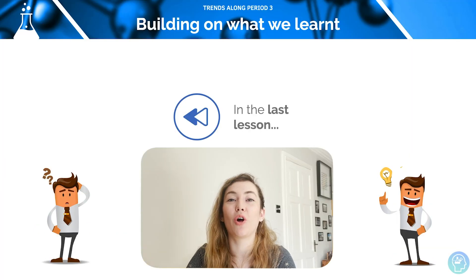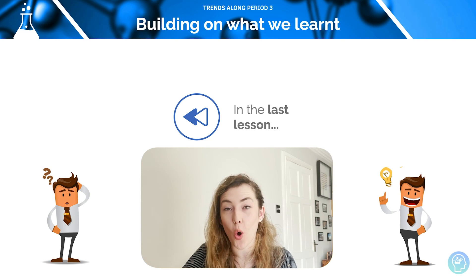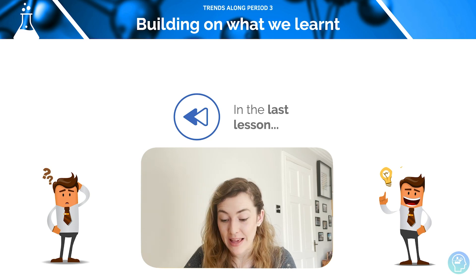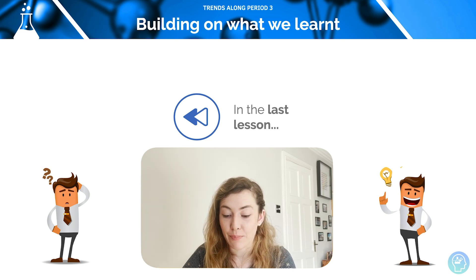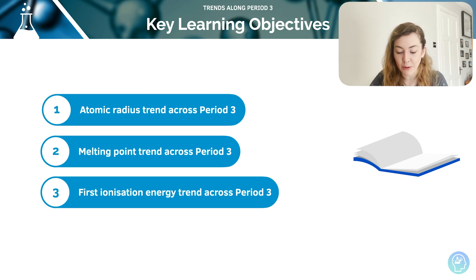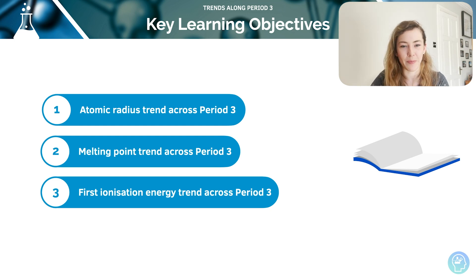Hi and welcome to this tutorial on trends along period 3. In the previous tutorial we learnt about classifying elements based on S, P and D block and also F block, and their proton number. This time we are having a look at the atomic radius trends, the melting point trends and the first ionisation energy trends as we move across period 3.